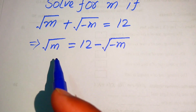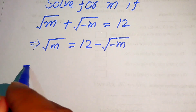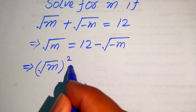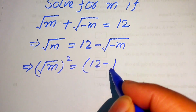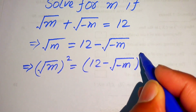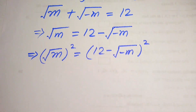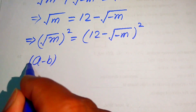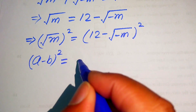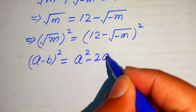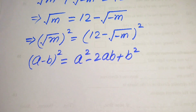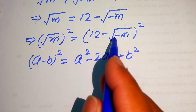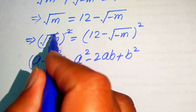In order to remove these radical signs we need to take the squaring on both of the sides, so it will be written as square root of m, whole squared, equals to 12 minus square root of minus m, whole squared. In the right hand side we will use the formula: a minus b whole square equals to a square minus 2ab plus b square.